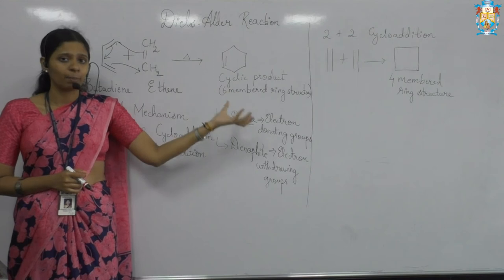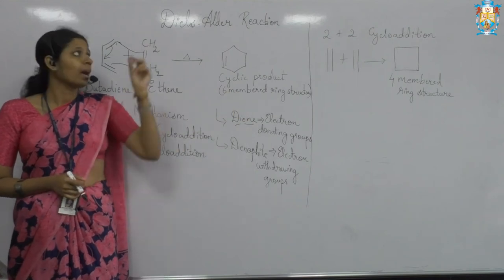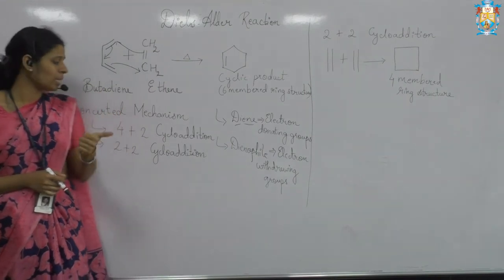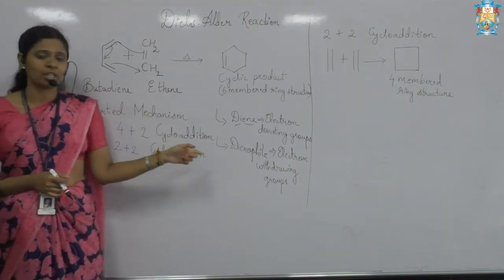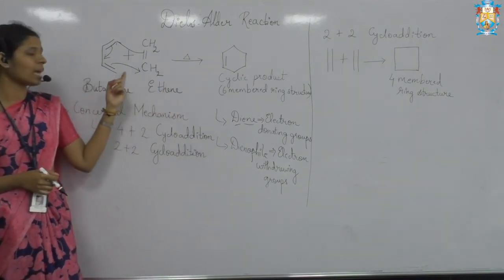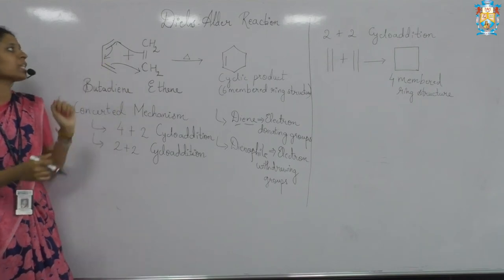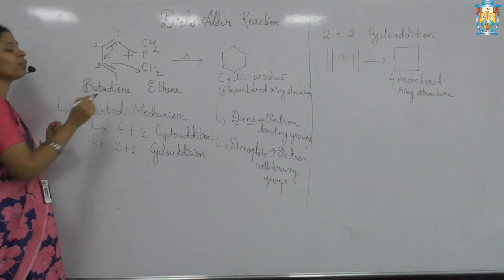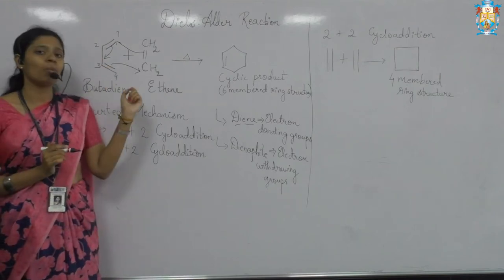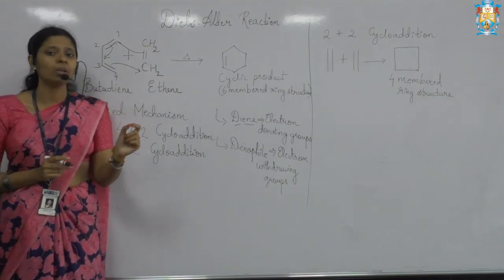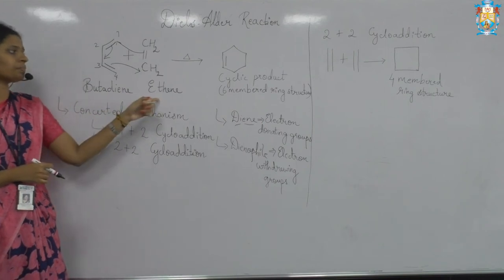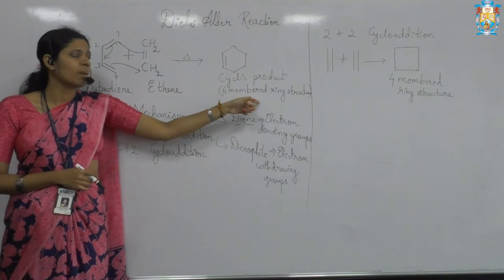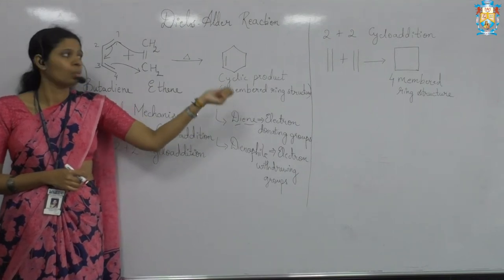In the cyclic product you have two types under the Diels-Alder reaction. One type is your four-plus-two cycloaddition, wherein I have taken the example of butadiene. You can see this is butadiene — one, two, three, four — containing four carbon atoms and two double bonds. So it is a butadiene molecule reacting with ethene to get the product, which is a cyclic product: a six-membered ring, cyclohexene, with one double bond.